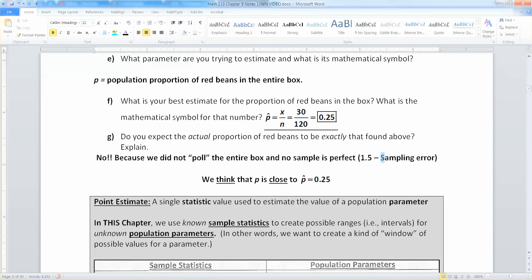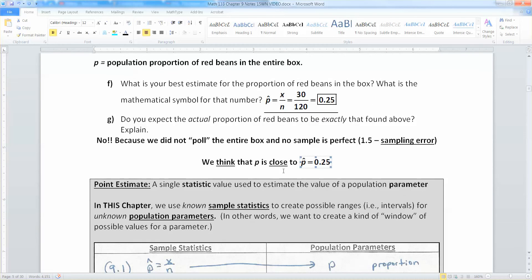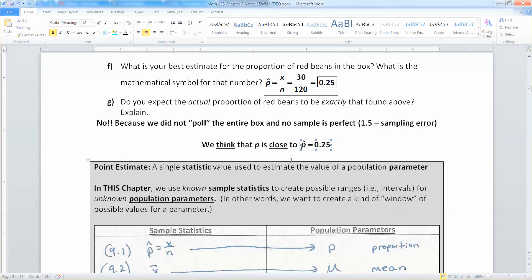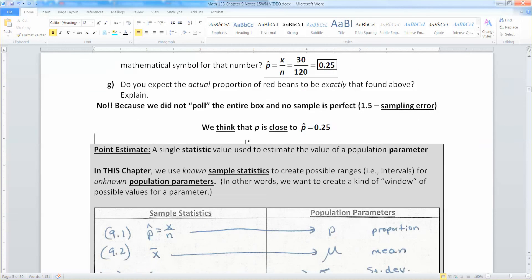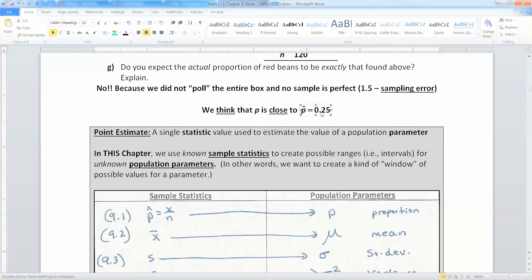But we do think that P is close to P hat. We don't know how close, but we think so. That's the whole point of what we're doing. We're taking our point estimate and we're saying that we think that the population value is close to that point estimate.